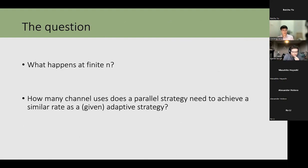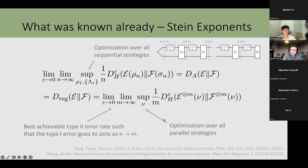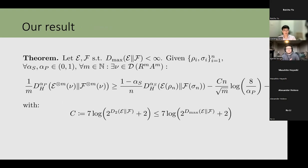What we would like to know is what happens at finite n. If I limit myself to some finite number of channel uses, how much better can an adaptive strategy be? Or equivalently, if I restrict to parallel strategies, how much worse is my rate going to be? From the purely asymptotic statement, it could be that one limit converges much faster than the other, so you need many more parallel channel uses than sequential ones — and we want to say something about that.